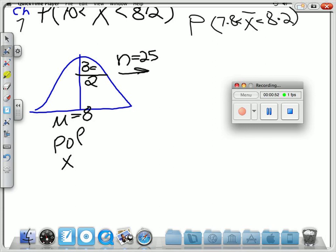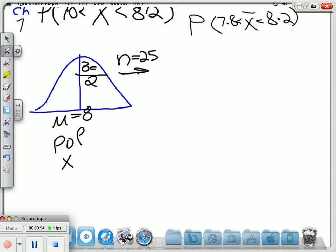If we remember the central limit theorem, you would remember that the X-bars, called the sampling distribution of the mean, also has a bell-shaped curve, always has a bell-shaped curve, with a middle value equal to the middle value of the original population, namely 8.